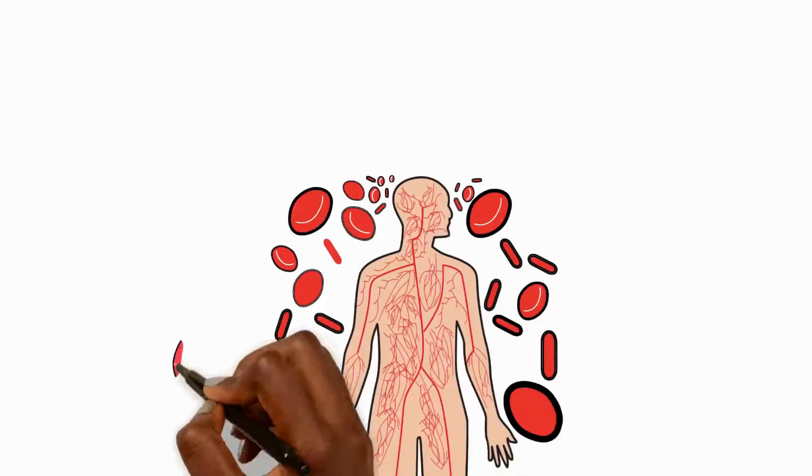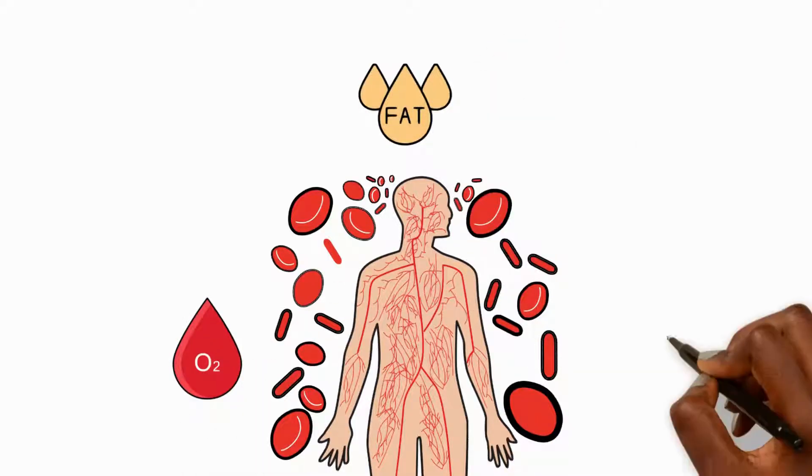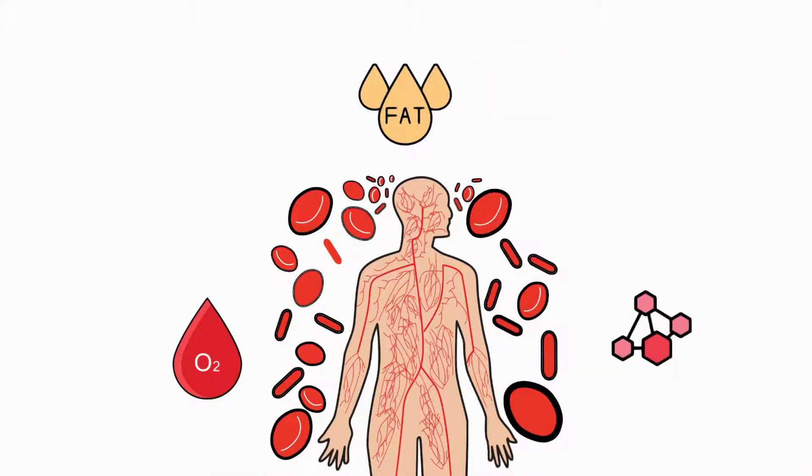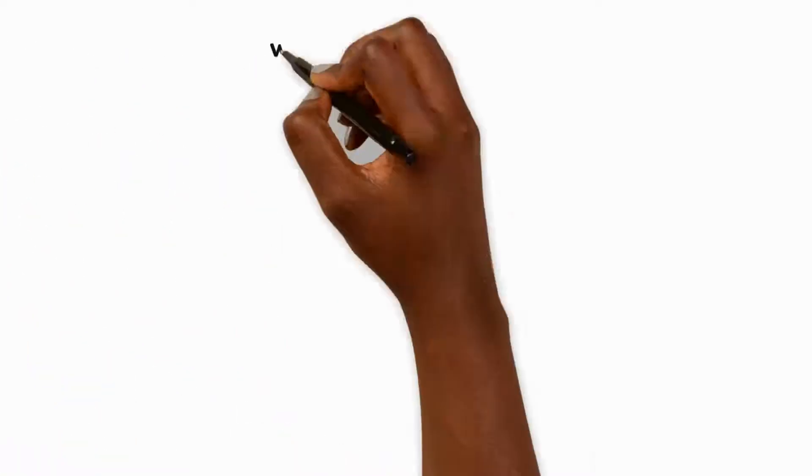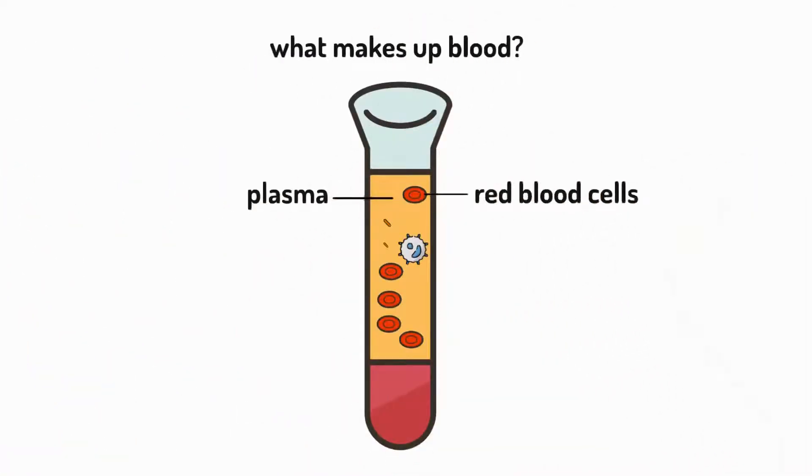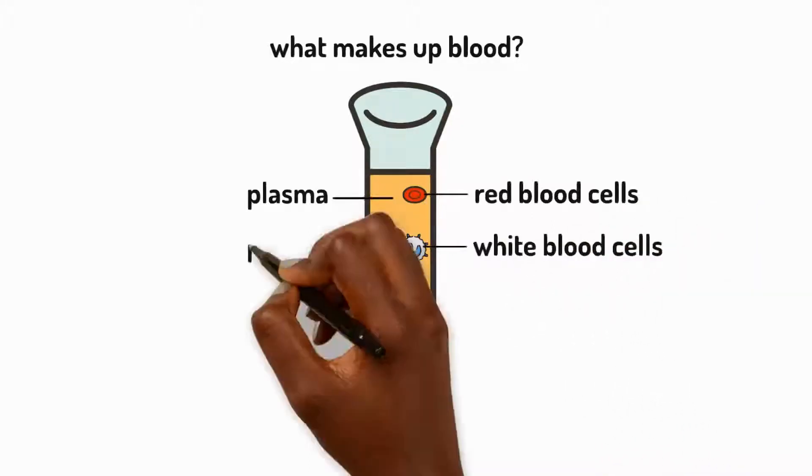Blood's main role is to transport oxygen, nutrients, and other substances around the body. Blood is made up of plasma, red blood cells, white blood cells, and platelets.